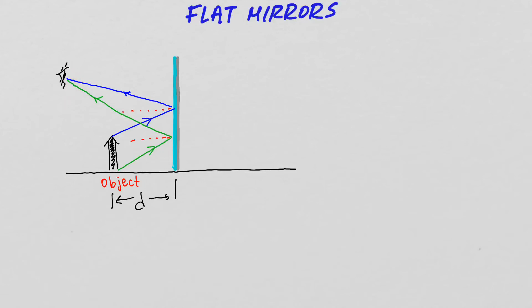So if we place an observer right here at this point, they will see those two light rays. And now the question is, what would they actually see as far as the image of this object is concerned in the flat mirror? For the observer, it would appear as if the light rays are coming from behind the mirror, like so and like so.